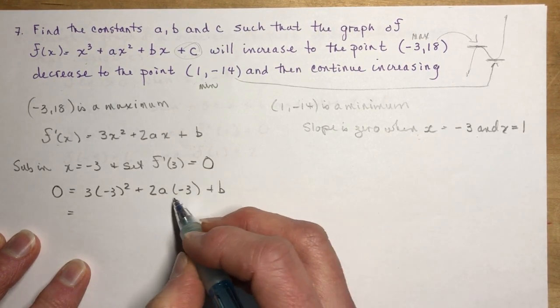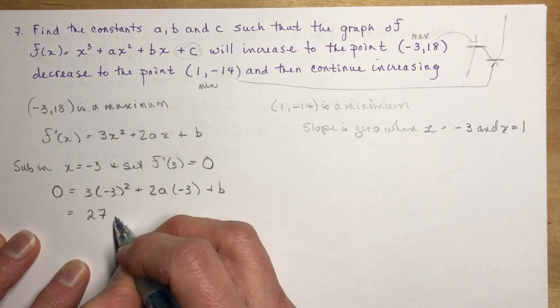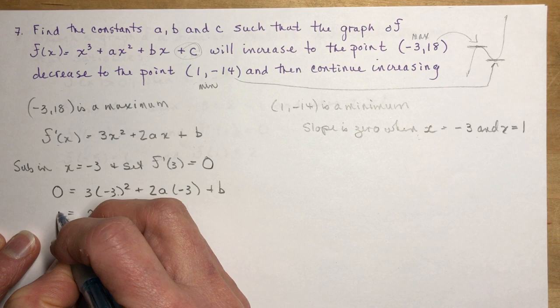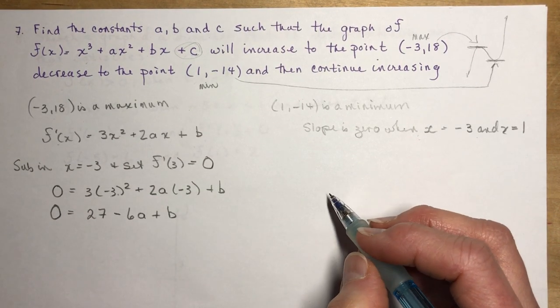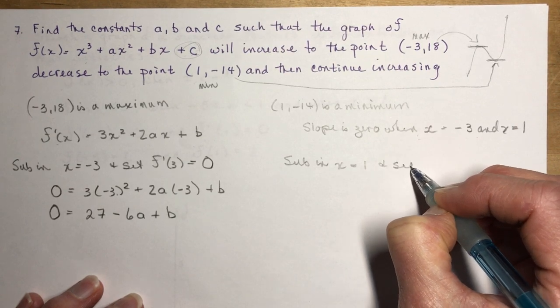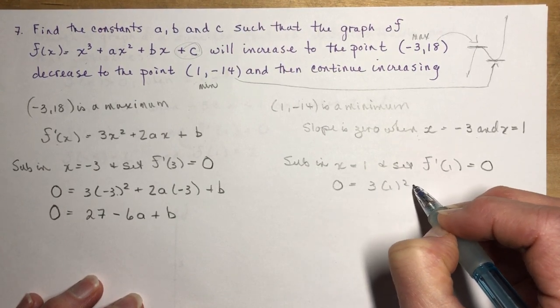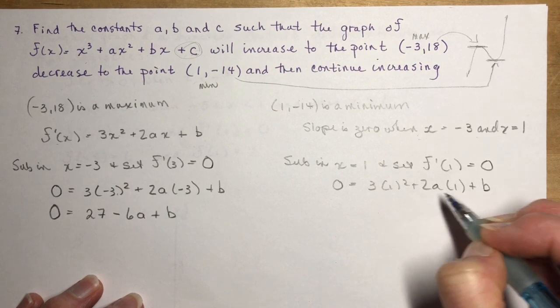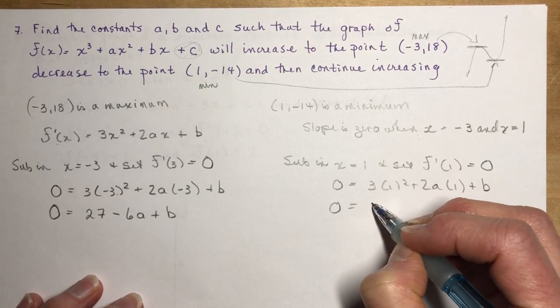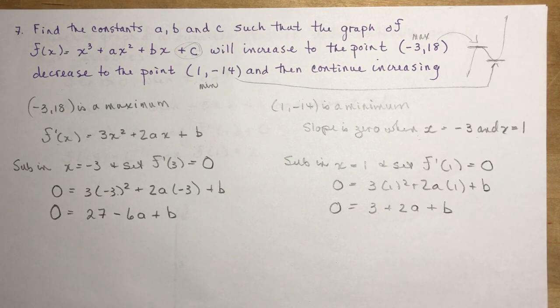So substitute x = -3 and set f'(-3) = 0. So 0 = 3(-3)² + 2a(-3) + b. So -3 squared is 9 times 3 is 27, and this is going to be -6a + b. Now I'm going to do the other one. Substitute x = 1 and set f'(1) = 0. So 0 = 3(1)² + 2a(1) + b. 0 = 3 + 2a + b.